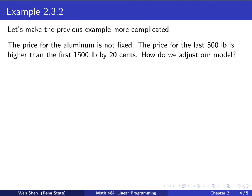This is example 2.3.2 in the textbook. It's built on top of the previous example by adding a layer of complication. Let's say the price for the aluminum is not fixed. The price for the last 500 pounds is higher than the first 1500 pounds, it's higher by 20 cents. So the profit function is computed at the lower price, but if you want to use the last 500 pounds, you have to pay 20 cents more. What it means is that 20 cents per pound will have to be taken out of your profit. How do we adjust our model?